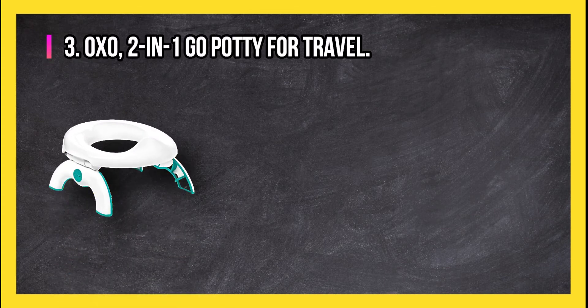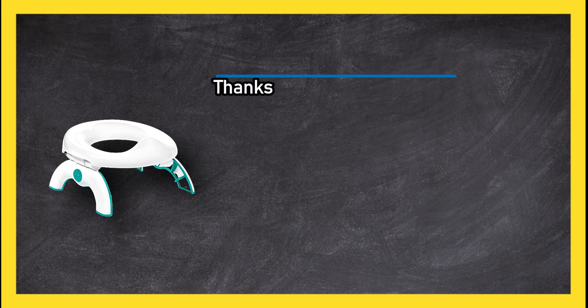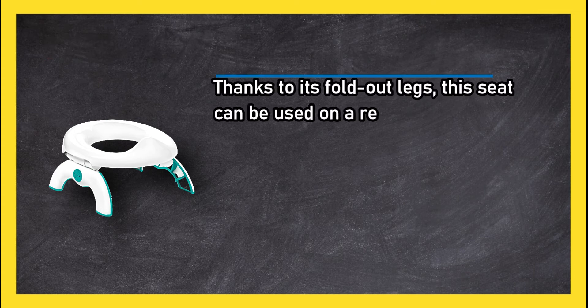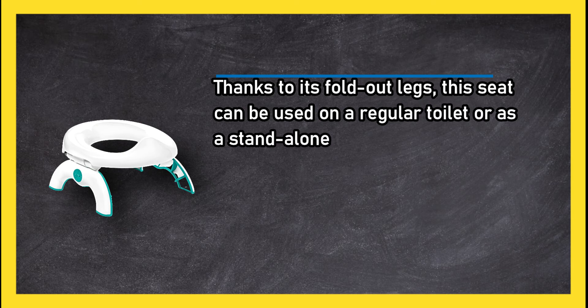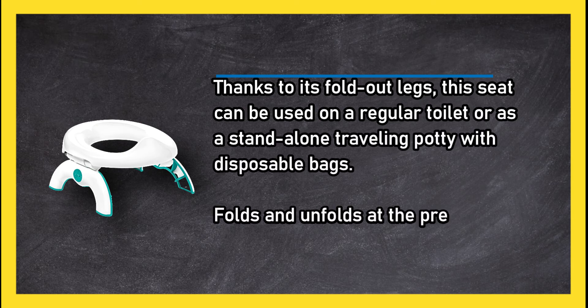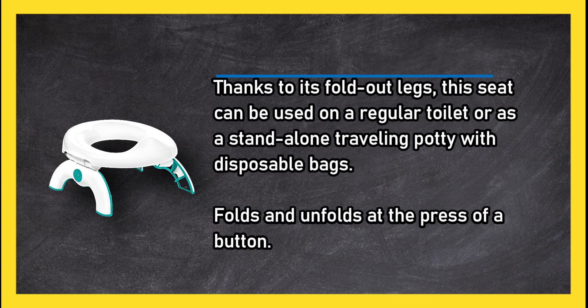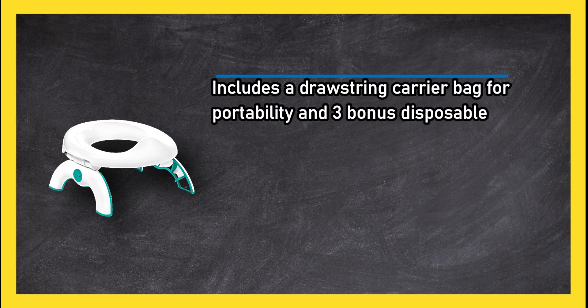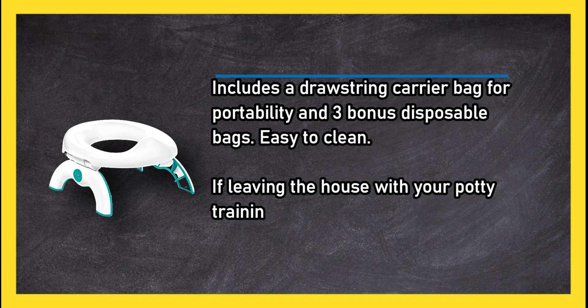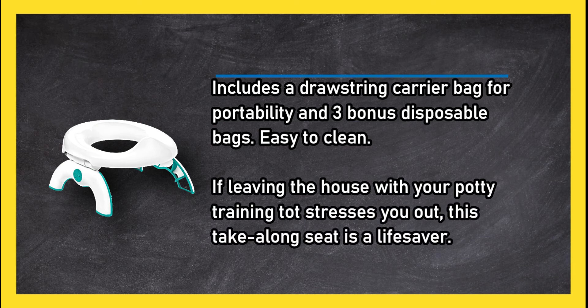Two-in-one go potty for travel. Thanks to its fold-out legs, this seat can be used on a regular toilet or as a standalone traveling potty with disposable bags. Folds and unfolds at the press of a button, includes a drawstring carrier bag for portability and three bonus disposable bags, easy to clean. If leaving the house with your potty training tot stresses you out, this take-along seat is a lifesaver.